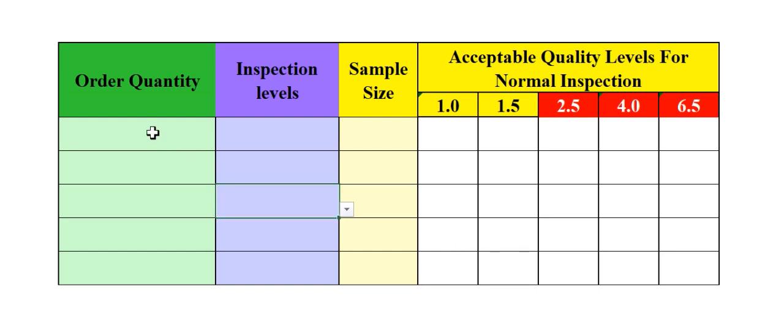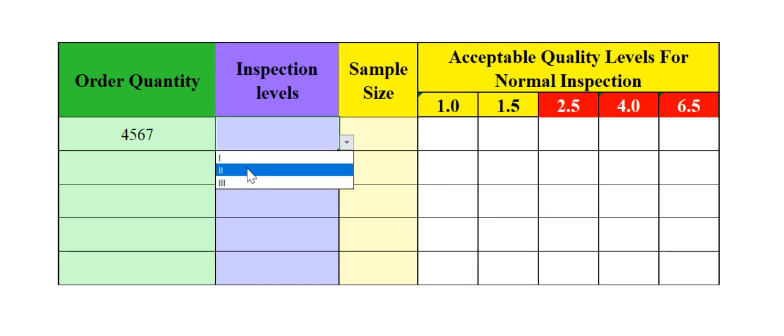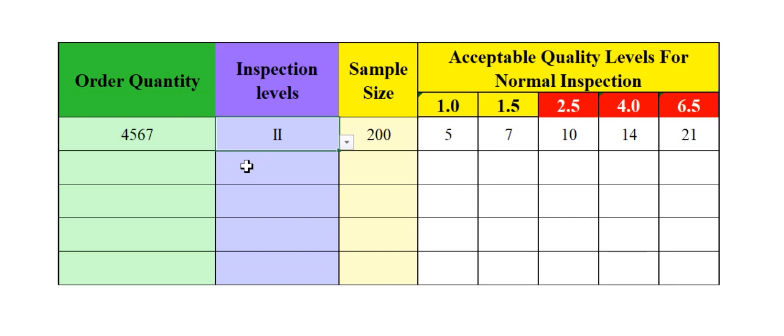When you are going to perform the inspection, you just find that the order quantity is 4,500, 4,600, 4,700 — this is your order quantity or sheet quantity. Then for the inspection level, you just follow that too.